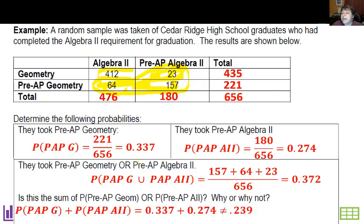Now if I add these two probabilities, I don't get 0.372. That's what we just figured out. Why isn't that? Well that's because I have some overlap. These 157s are being counted for the pre-AP geometry probability and for the pre-AP Algebra 2 probability, so it gets counted twice. There's overlap.